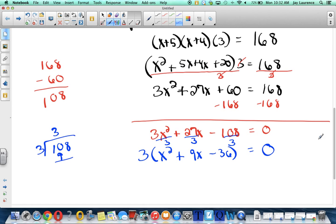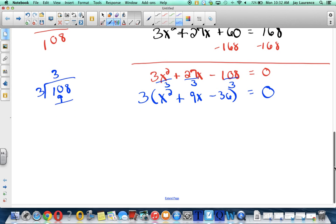Okay. Now, this is not a perfect square trinomial. I'm going to need to multiply a times c. A would be 1, right? A equals 1. C would equal 36. So I need two factors of 36 that subtract to get 9.